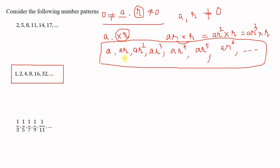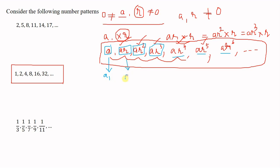The general form is: a, ar, ar², ar³, ar⁴, ar⁵, ar⁶, etc. As the terms progress, the power of r increases — first there is no power of r, then one r, then r², r³, r⁴, r⁵, and so on. We denote the first term by a₁, second by a₂, third by a₃, fourth by a₄, fifth by a₅, and so on.